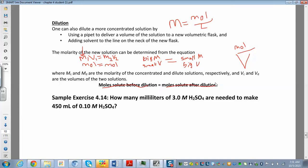So let's see if we can do one of these problems. How many milliliters of 3 molar sulfuric acid are needed to make 450 mL of 0.1 molar? This is my final M2, is 0.10. M1 is 3 molar. See how the initial concentration is a lot higher than your final concentration?